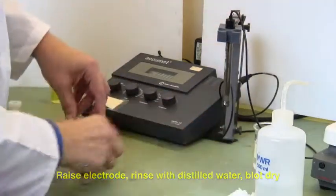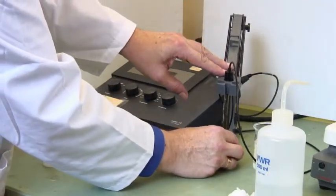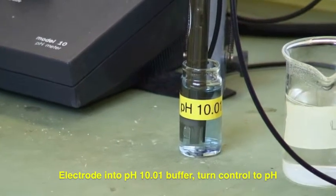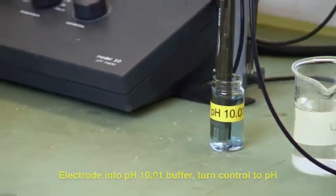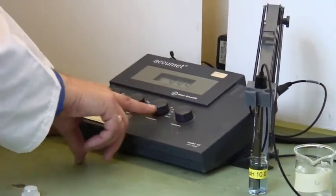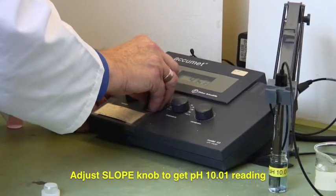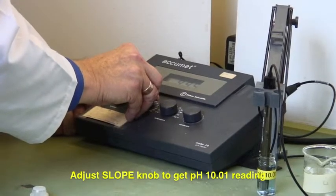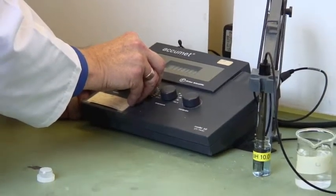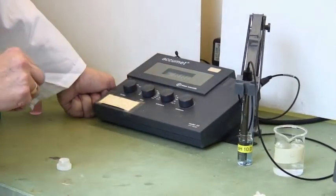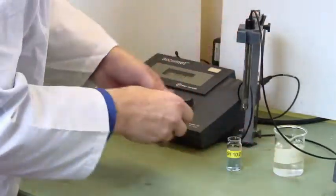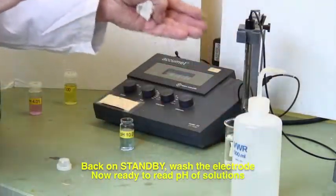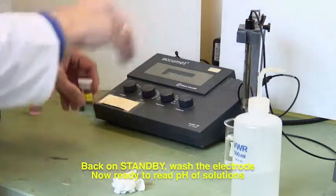Blot it again, and we're now going to put it into pH 10. Now at this point, we put it onto pH, and instead of using standardize, we're going to use the slope to adjust this until it gets to 10.01. And so we adjust this until we're getting to 10.01. There we go. Put it on standby, and again lift up, wash the electrodes off, and we're now ready to take pH measurements using this machine.